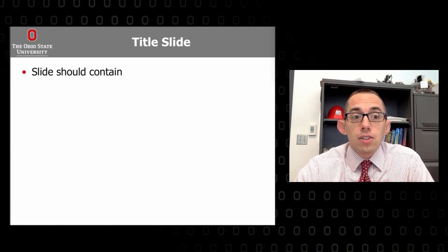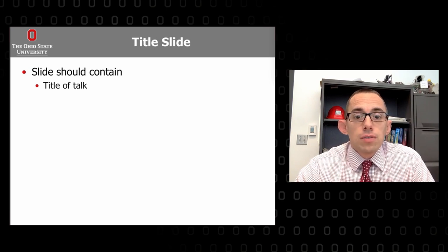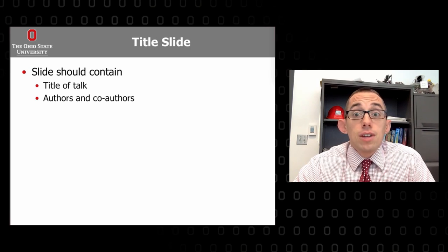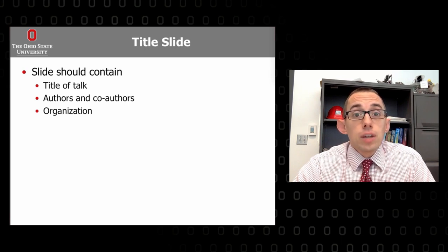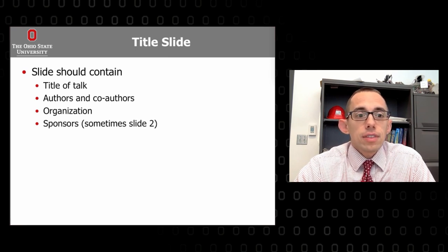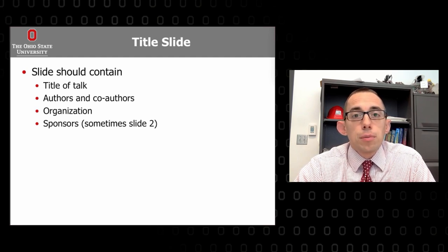The title slide should have the title of your talk, the authors and co-authors. I can't tell you how many times I've seen people stand up and not put their name on the title slide. Who are you, who else helped you write it, and what's the title of your talk? Where are you from? If you're presenting externally, list your institution like the Ohio State University. Internally, identify yourself with a class or lab group. Sometimes sponsors go on the title slide or on slide two — something you sort out with your sponsor, but it should be near the front.